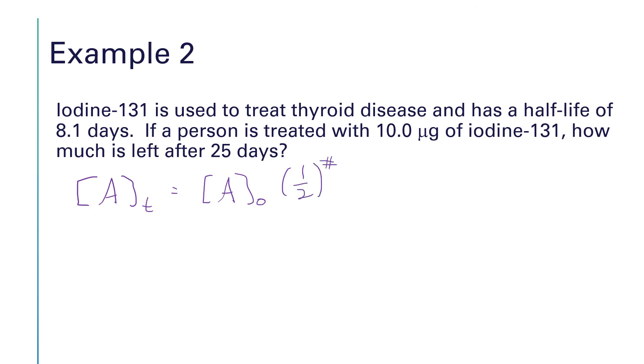I prefer to use the equation that A sub t is equal to A0 times 1 half raised to the number of half-lives. You can certainly use the standard form of the first order integrated rate law. I just think that this form of that equation is a little bit easier to use.